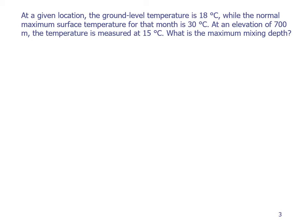Here's an example problem. At a given location, the ground level temperature is 18 degrees Celsius, while the normal maximum surface temperature for that month is 30 degrees Celsius. At an elevation of 700 meters, the temperature is measured to be 15 degrees Celsius. What is the maximum mixing depth? Let's draw our temperature as a function of height.